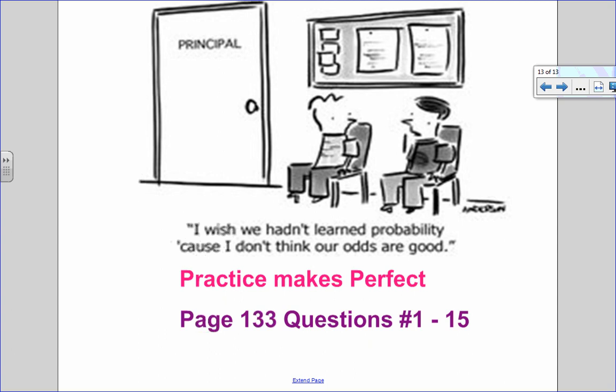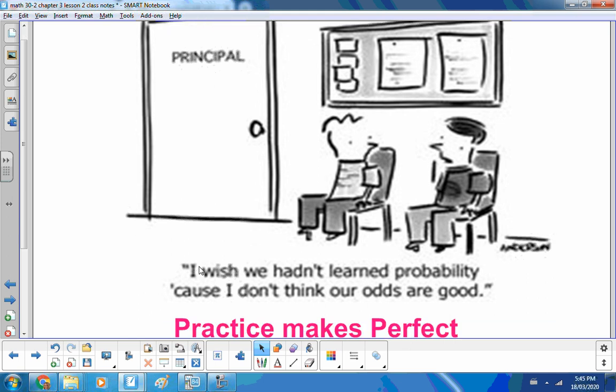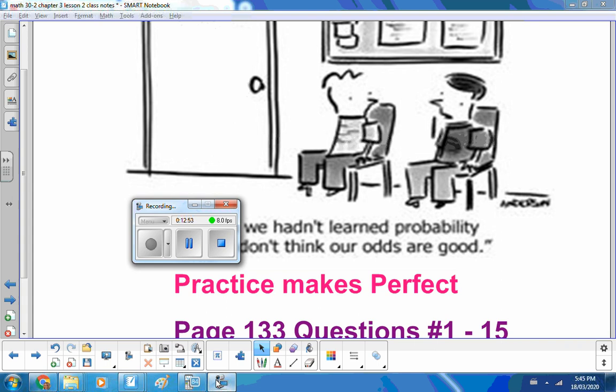I like our cartoon today, two kids sitting outside the principal's office. I wish we hadn't learned about probability because I don't think our odds are good. So you guys can go ahead and do questions 1 through 15 in your workbook and all the detailed solutions are on D2L. The next lesson that we'll be looking at is lesson number three, which is mutually exclusive events and the OR probability.